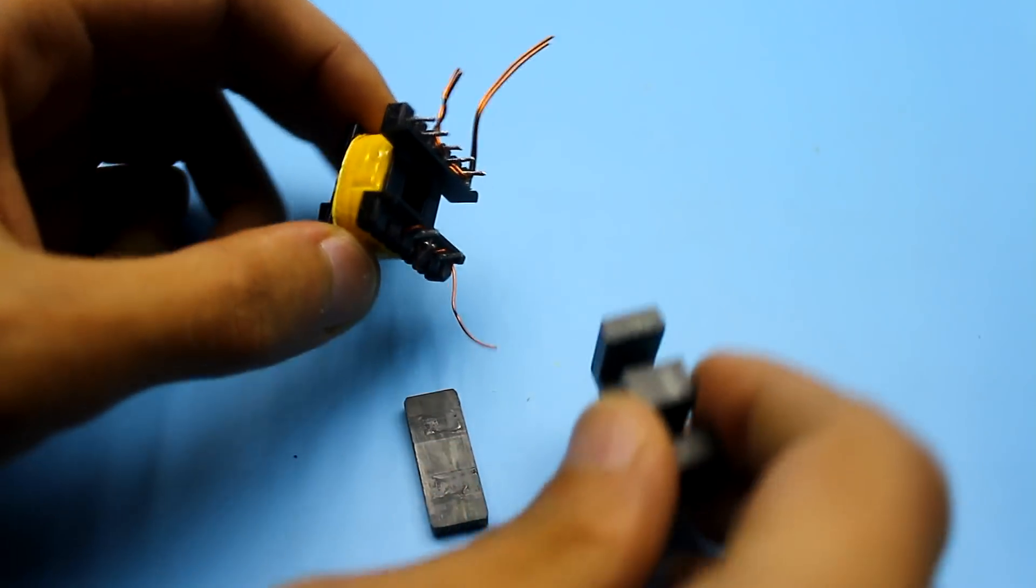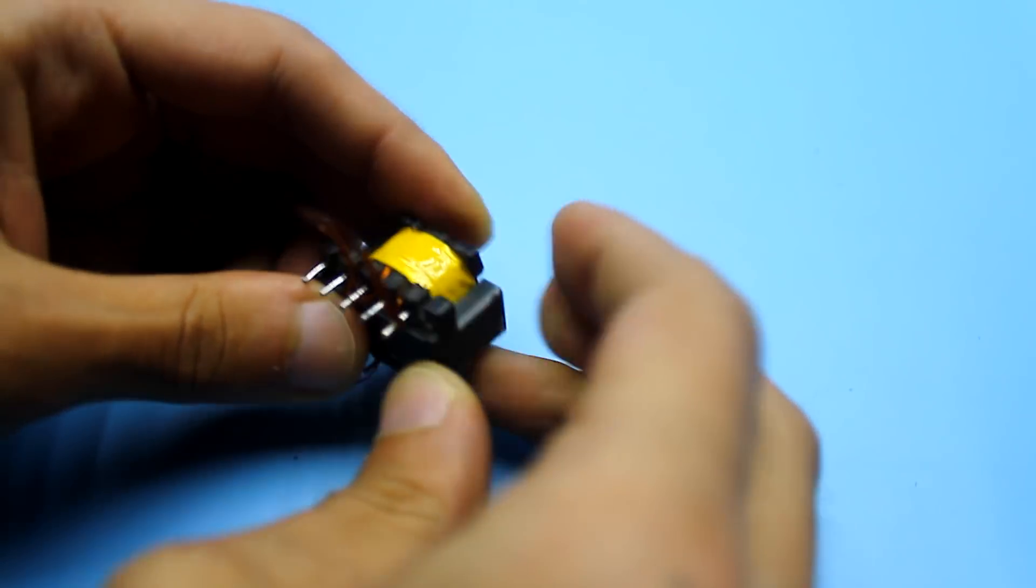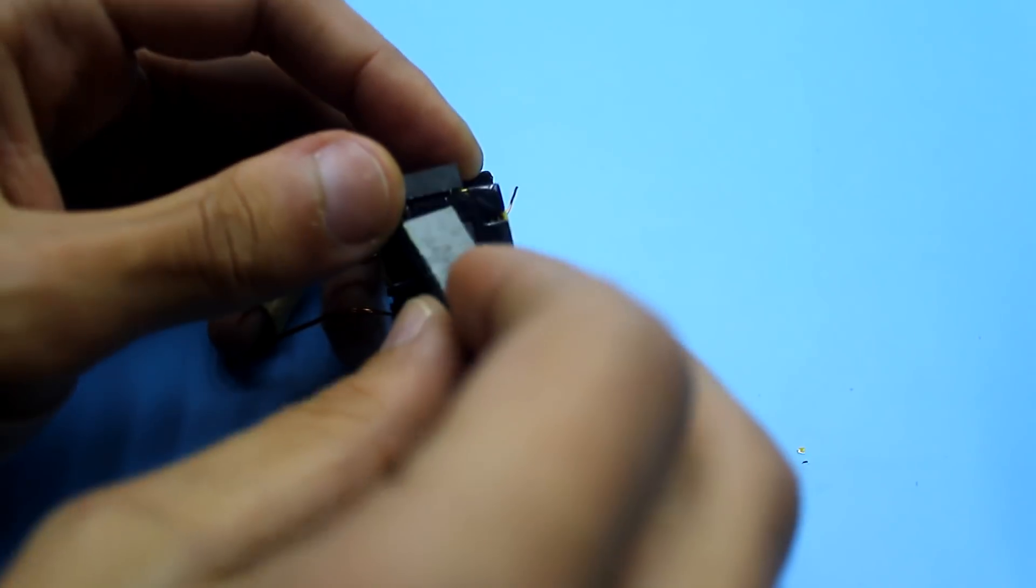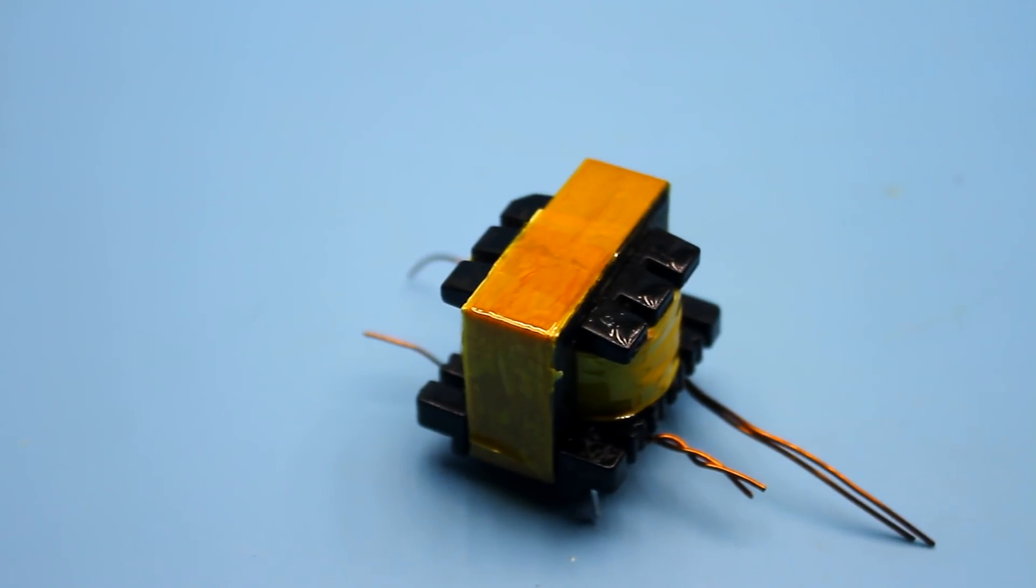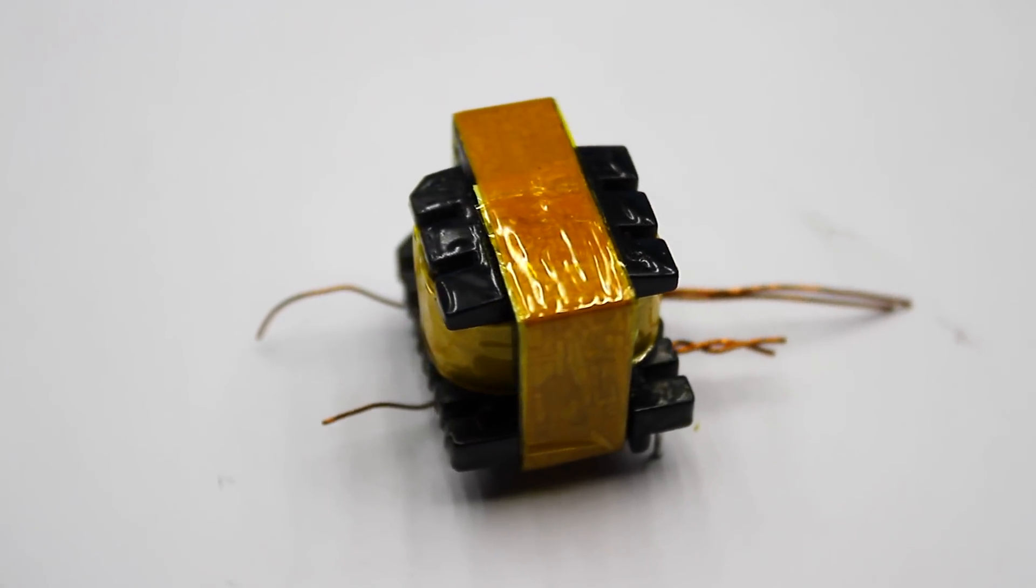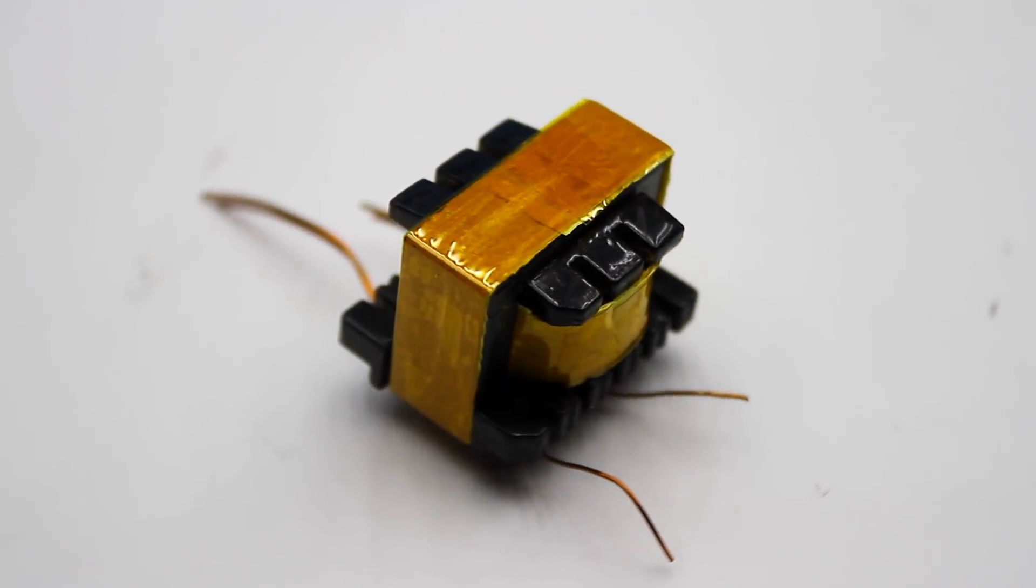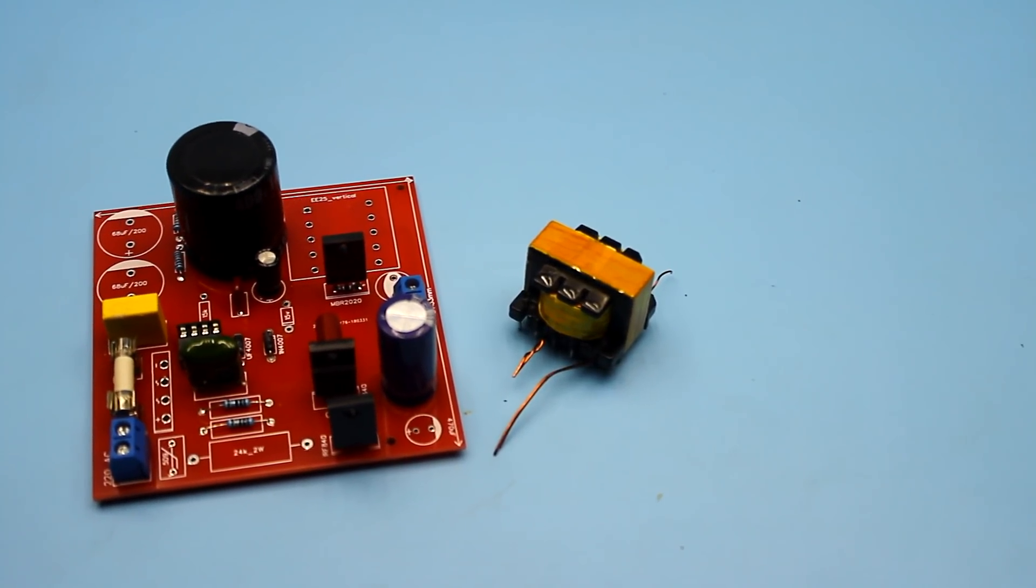We reassemble the finished transformer. The core can be glued or simply fixed with adhesive tape or both at once. Because of the type of the output rectifier, we need to phase the secondary winding. But let's talk about this in the following video in which I will show the circuit where this transformer will work and other details related to the power source.